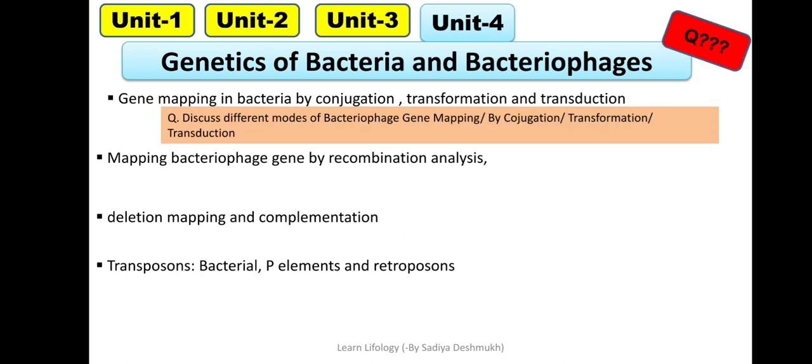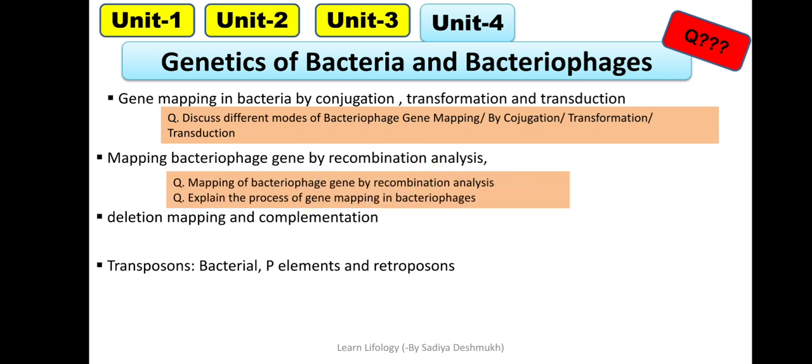Questions from the first point: you will be asked about bacteriophage gene mapping. Here it's not general; sometimes they ask: explain gene mapping by conjugation, sometimes by transformation, and sometimes by transduction. So you should understand the difference between the three, and write only what is asked. Then in mapping, they ask: mapping of bacteriophage - explain mapping with the help of recombination analysis, or general mapping in bacteriophage. Then deletion mapping also has questions.